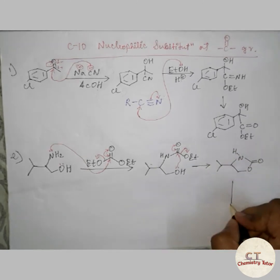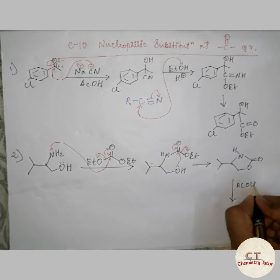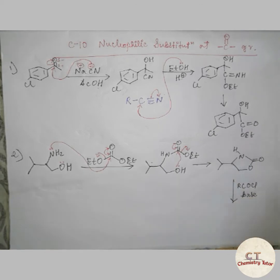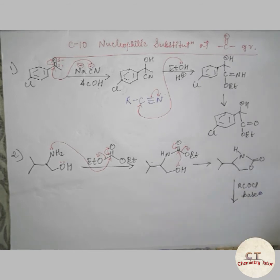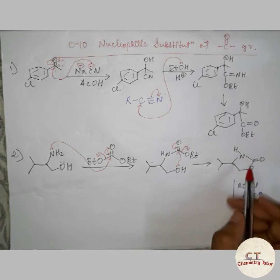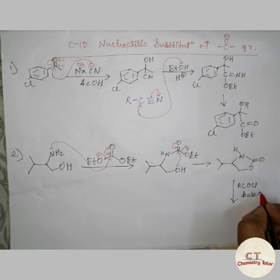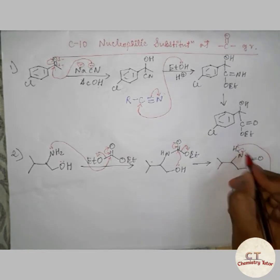Further, this compound on reaction with an acid chloride (RCOCl) in the presence of a base — what will the product be? Since a base is present, it is going to abstract the most acidic proton. Nitrogen is electronegative, so the proton attached to nitrogen is the most acidic. The base will abstract this proton and the negative charge will reside on the nitrogen atom.